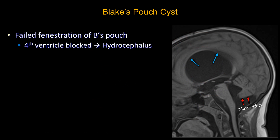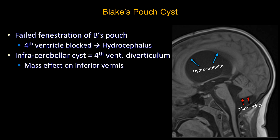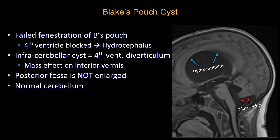This is an important distinction from mega cisterna magna: mega cisterna magna should not cause obstruction and therefore produces no hydrocephalus. The posterior fossa is not enlarged unlike in Dandy Walker malformation, and the vermis should be normal in size.